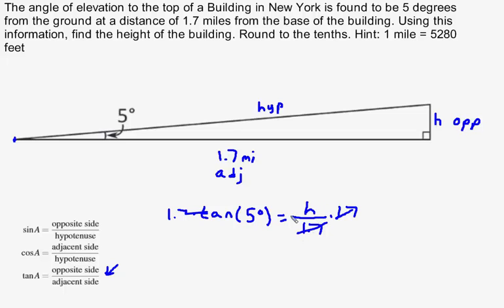So that I get H, the height of my building, is 1.7 times the tangent of 5 degrees.